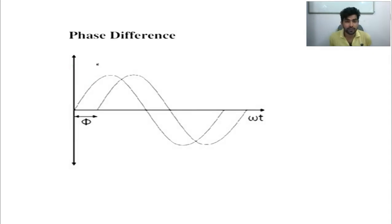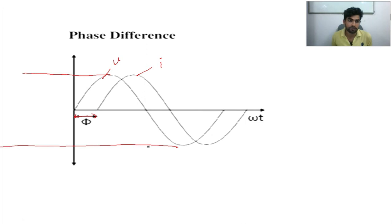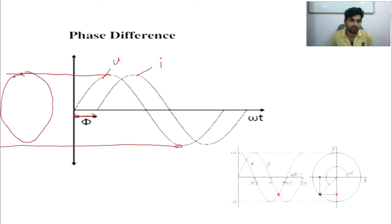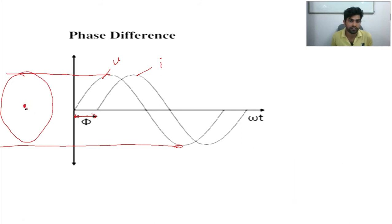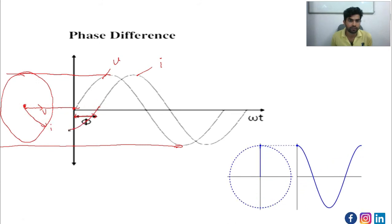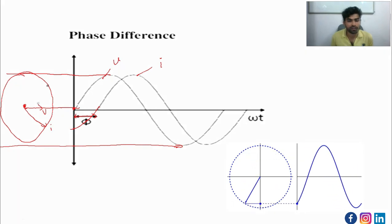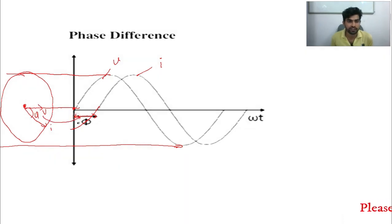Next we'll discuss phase difference — the difference in angle between voltage and current. This difference is called phase difference. To explain again: voltage starts here, current is located here on the rotating circle diagram, and the angular difference between voltage and current is the phase difference.